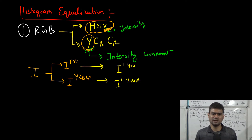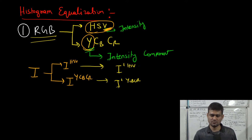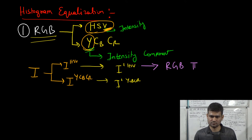We get image I prime HSV or I prime YCbCr. Then, to get the histogram equalized color image back, we convert the transformed HSV image back into the RGB color space to obtain the final histogram equalized image I double prime.